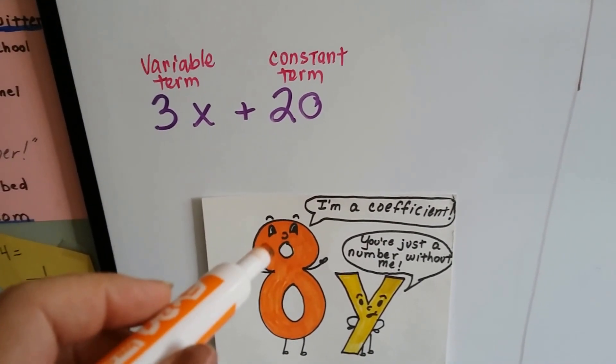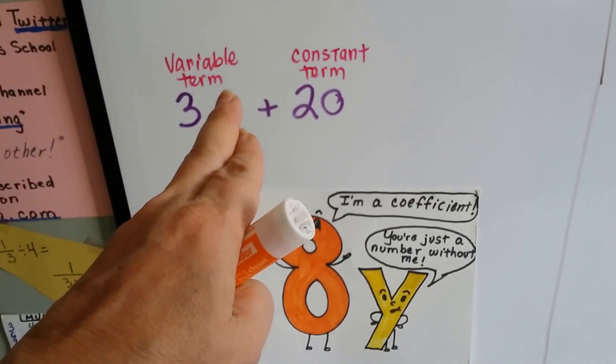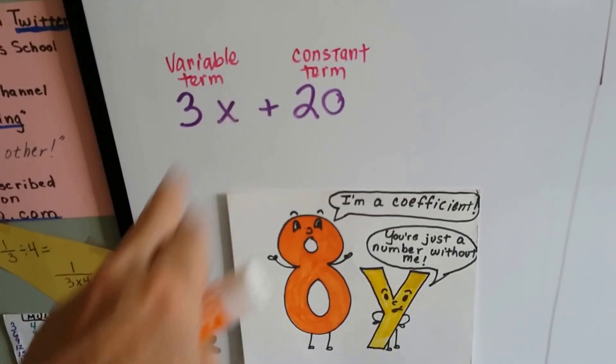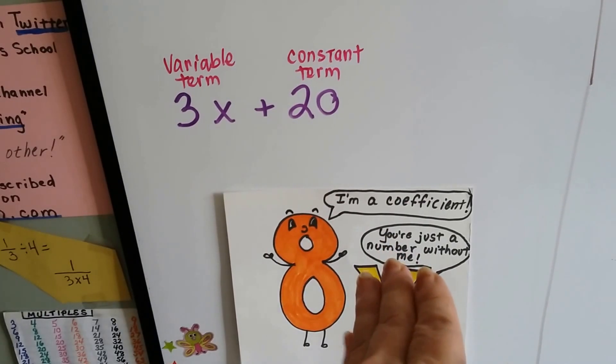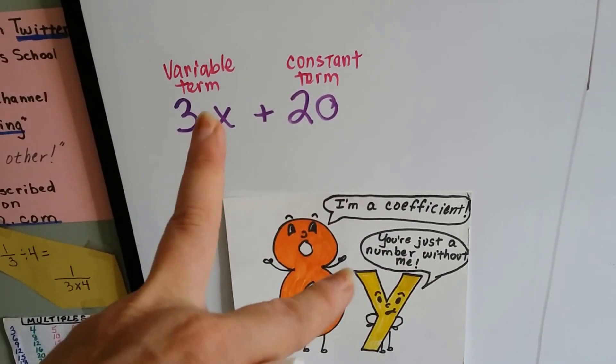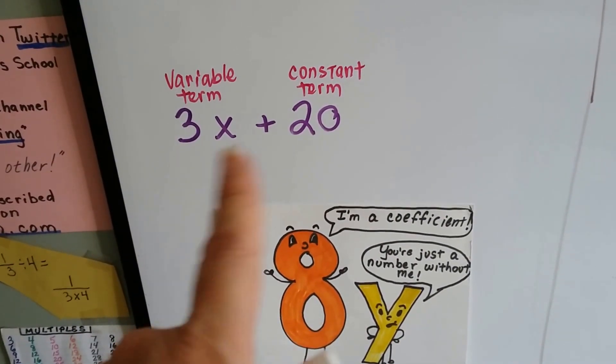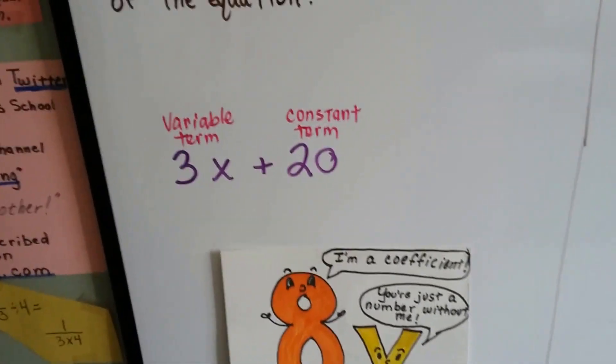See? Just like this 8 is the coefficient and the y is the variable. If the 3 were by itself, it would just be a standalone number. See? If this 8 were by itself, he would just be a plain old number. But as long as they've got the variable next to them, they're a coefficient, and they're multiplied to the variable, right?